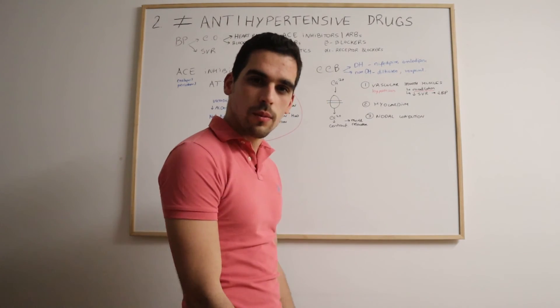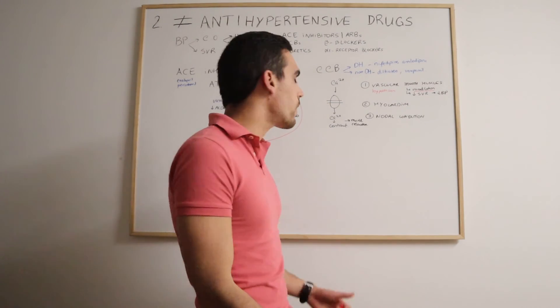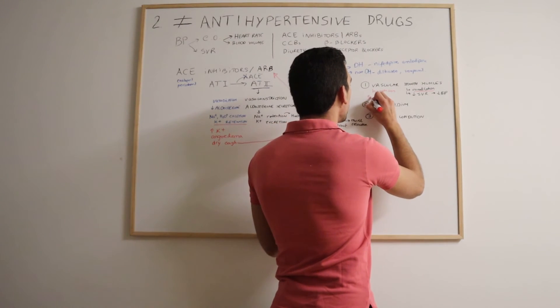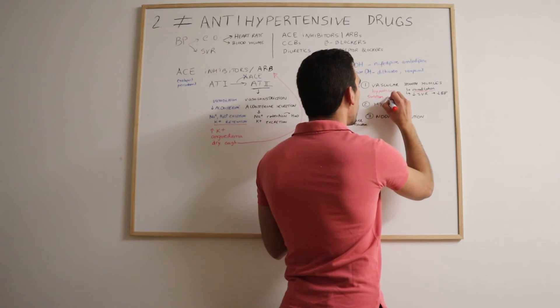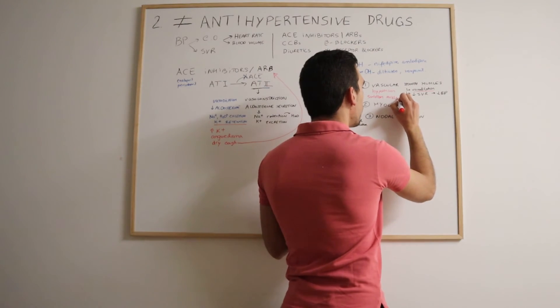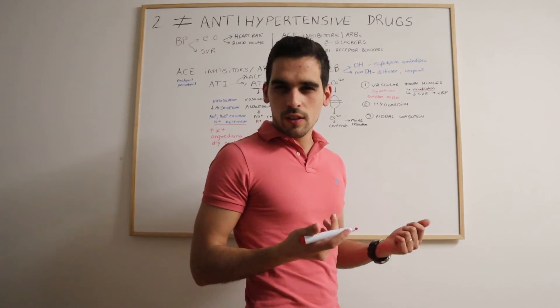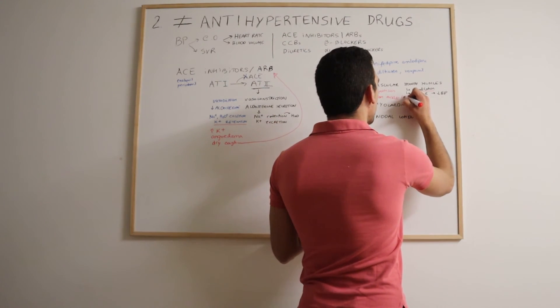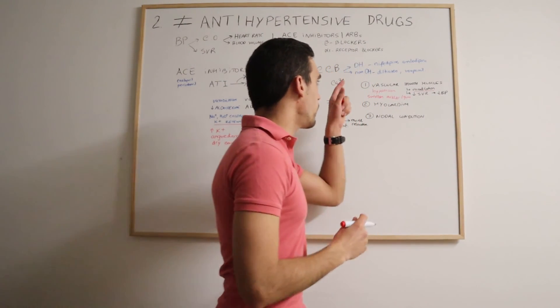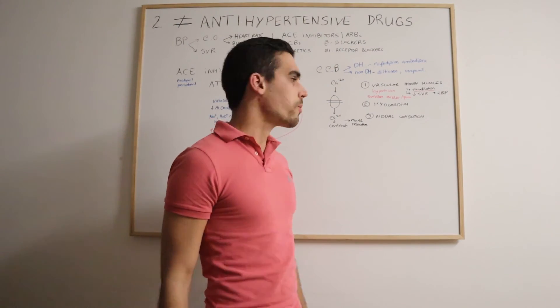Also, these drugs can cause like edema, peripheral edema. Patients can suffer swollen ankles. That's like a possible side effect with them or even swollen gums is also a possible side effect. It's called the gingival hyperplasia. These are the main side effects with the dihydropyridine calcium channel blockers.